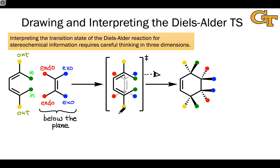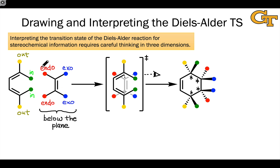Take a moment to pause the video and make sure you can correlate the configuration of the product — specifically the positions of groups at these four new stereocenters — with the positions of the groups in the transition state and going all the way back to the reactants: the positions of the endo, exo, out, and in groups in the starting dienophile and diene.